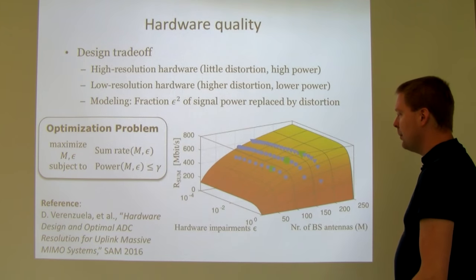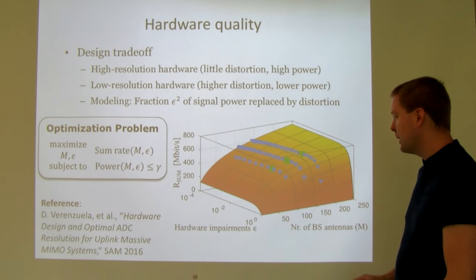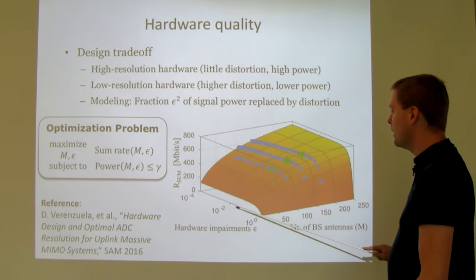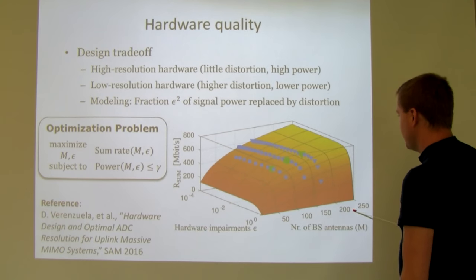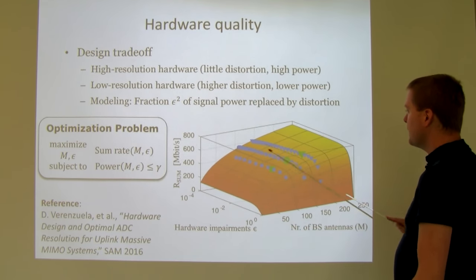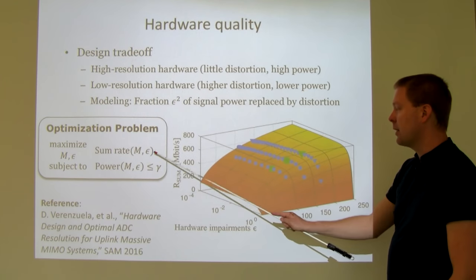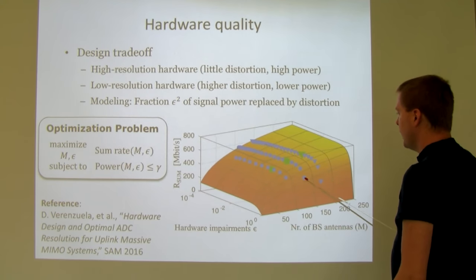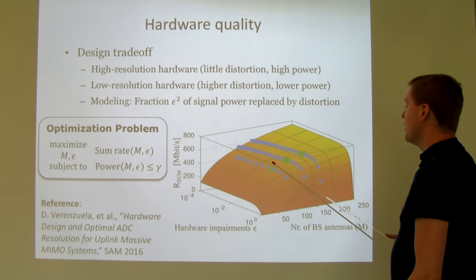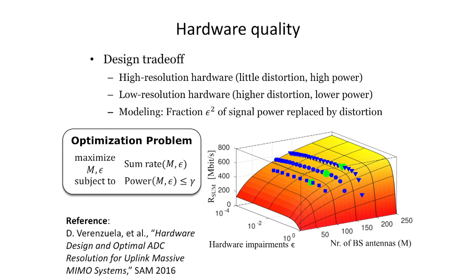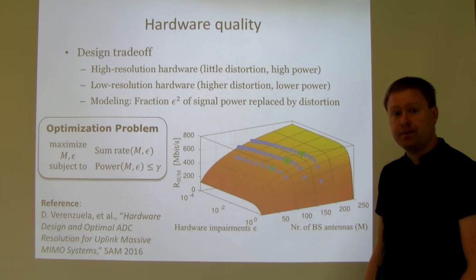In the paper 'Hardware Design and Optimal ADC Resolution for Uplink Massive MIMO Systems' (2016), we formulated an optimization problem to select the number of antennas and the hardware quality per antenna, characterizing the sum rate and power consumption as functions of both. With a maximum power budget Gamma, we find the combination that gives the best energy efficiency — comparing few antennas with good hardware versus many antennas with bad hardware. Simulation results show, for different values of Gamma, the optimal point (marked in green) on the curve of antennas versus hardware quality factor epsilon.